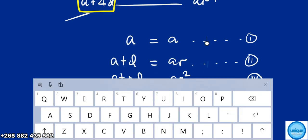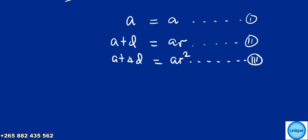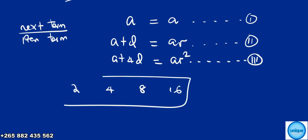Let's start equating: a equals a, a plus d equals ar (equation 1), and a plus 4d equals ar squared (equation 2). To find the common ratio, we can use the next term divided by the previous term. For example, in the sequence 2, 4, 8, 16, the common ratio is 4 divided by 2, which equals 2.